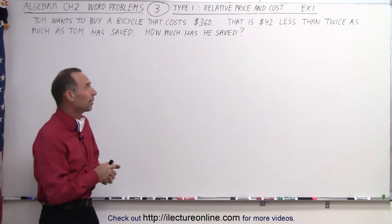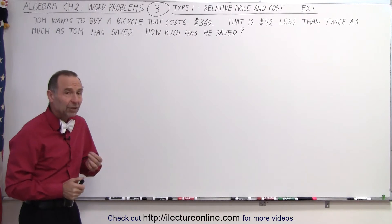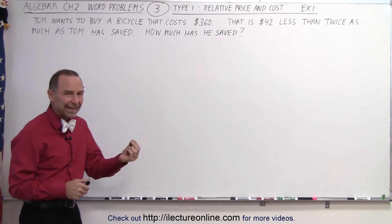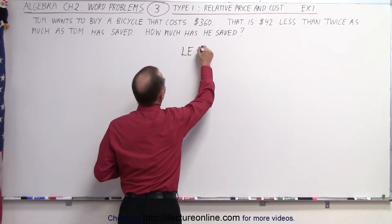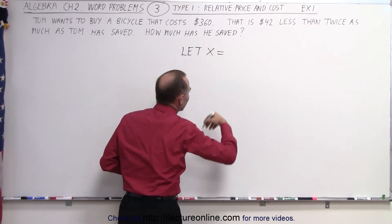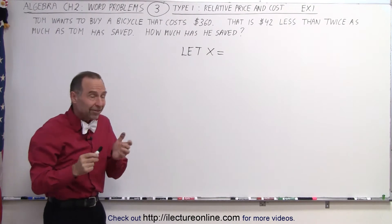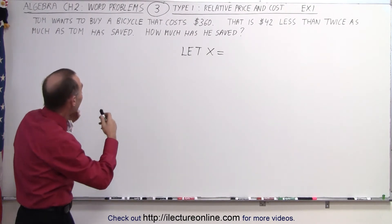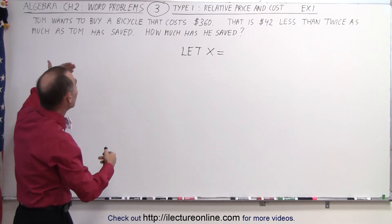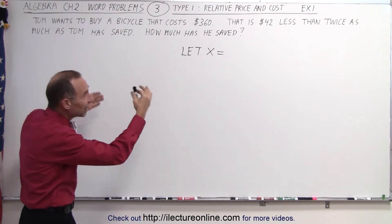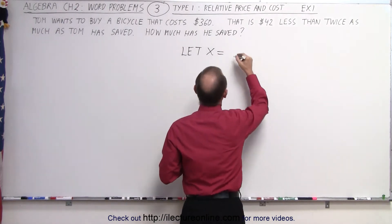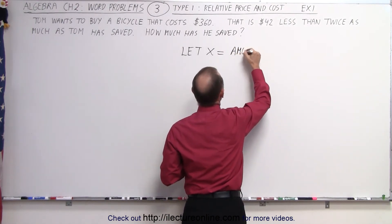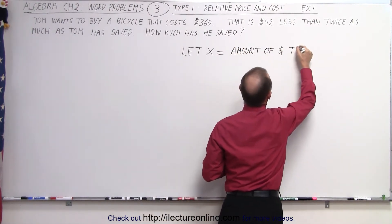Well, how do we start a problem like that? Typically, it starts with the sentence, let X equal something. So, let's start with that. Let X equal, now we need to let X equal something and in this case, we probably want to let X be the unknown how much Tom has saved because everything is in terms of how much he has saved. So, let X equal represent the amount of dollars that Tom has saved.